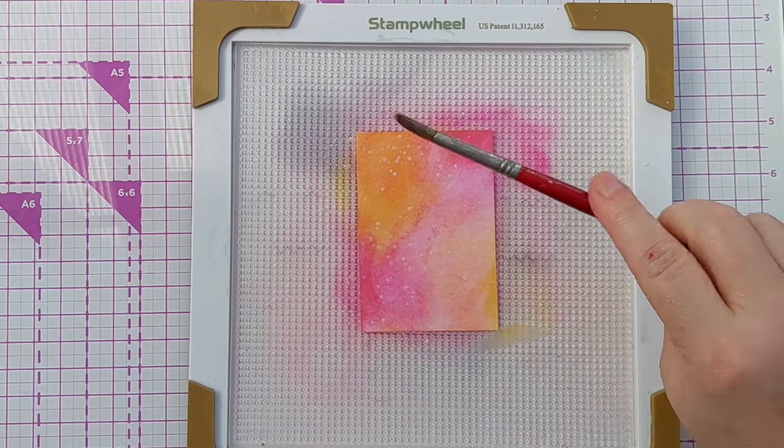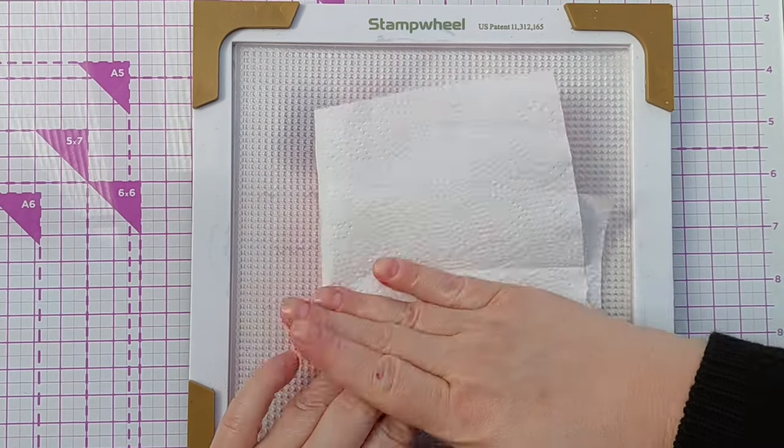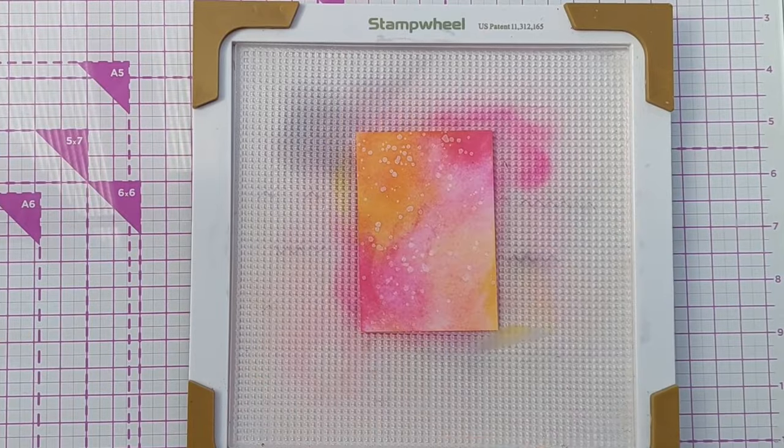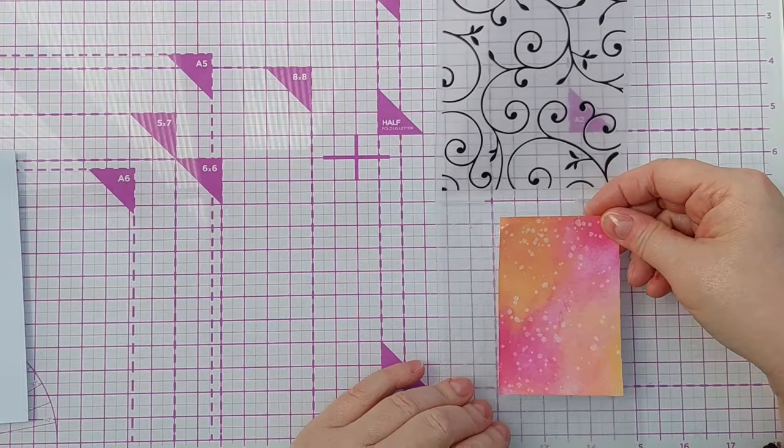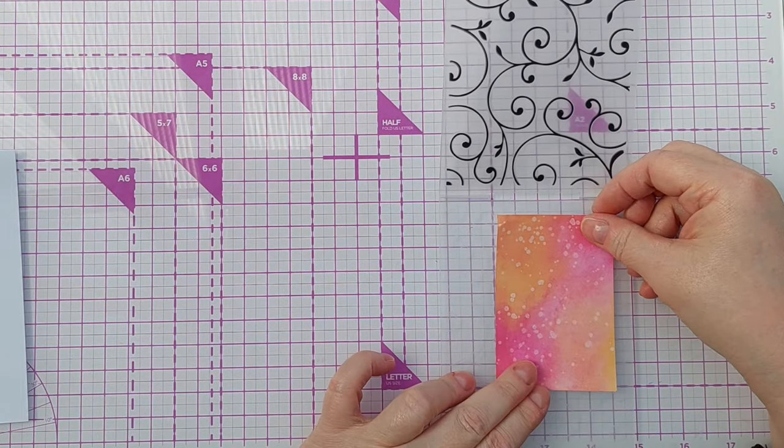After that I took a wet paintbrush and spattered on some water with the intention of lifting off some color to give a bit of variation. But what happened was my paintbrush had some metallic ink still in it, so I ended up with some metallic splatters which looked really pretty, so I left it as it was.